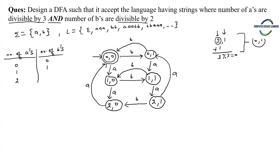Let us check that transitions are complete for all states and all symbols. From (2,0) on 'b', number of b's increases to 1, so we go to (2,1). States (0,0), (1,0), (2,0), (0,1), (1,1), and (2,1) are all complete. This is the machine that will serve our purpose and accept this particular language.